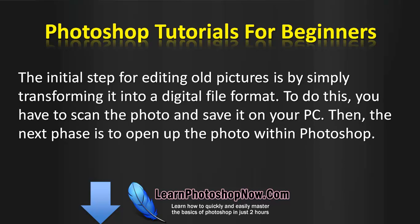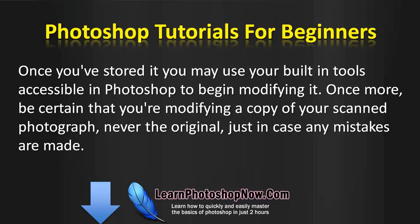The initial step for editing old pictures is simply transforming them into a digital file format. To do this, you have to scan the photo and save it on your PC. Then the next phase is to open up the photo within Photoshop. Once you've stored it, you may use the built-in tools accessible in Photoshop to begin modifying it. Be certain that you are modifying a copy of your scanned photograph — never the original — just in case any mistakes are made.